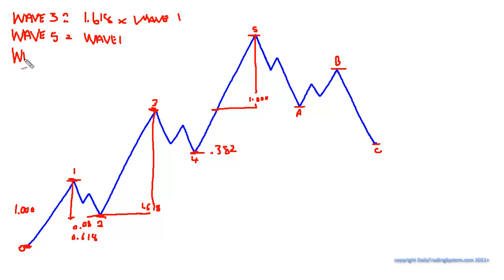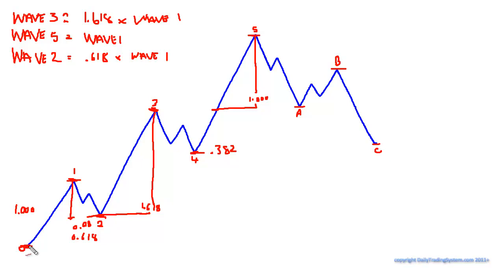Wave two equals 0.618 times wave one. Basically we calculate the distance from wave zero to wave one, so if that was 100 pips, we want to find the wave two projection point. We calculate 61.8% of that move, so that would be 61.8 pips — by rights wave two should come down by 61.8 pips from wave one, and that will form wave two.